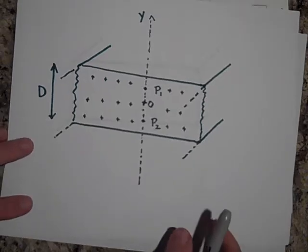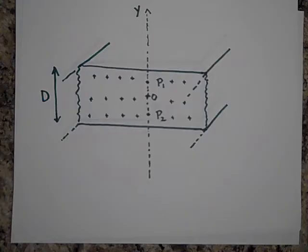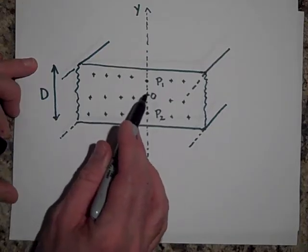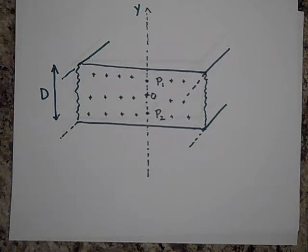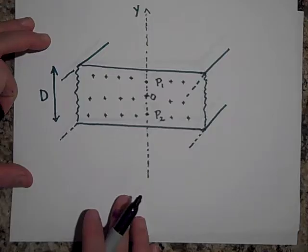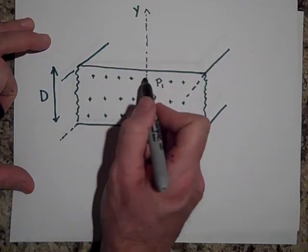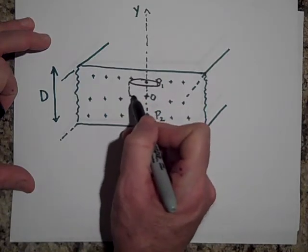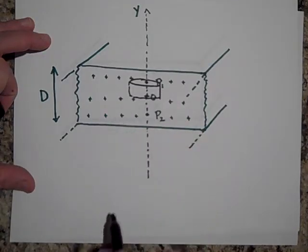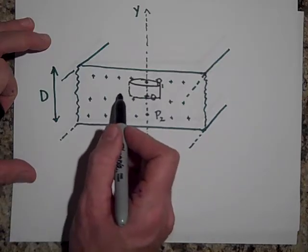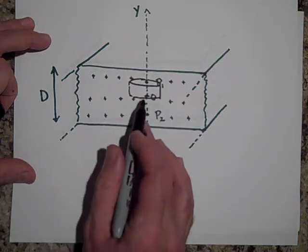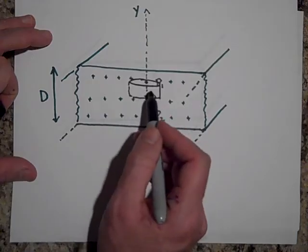There's our slab of charge. I'd like to find the electric field at P1. The electric field's magnitude at P1 is the same as at P2 if they're the same distance from the center - 0 is the center. To find the electric field at P1, I'm going to make a cylinder that starts right there and goes straight down to the center. At the center there is no electric field, because a positive charge there would be pushed equally up and down, so the net field is zero.